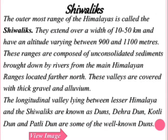The outermost range of the Himalayas is called the Shivalik. It extends over a width of 10 to 50 kilometers and has an altitude varying between 900 and 1100 meters — making it the smallest of the three Himalayan ranges. The longitudinal valleys lying between the Lesser Himalayas and the Shivalik are known as Duns.